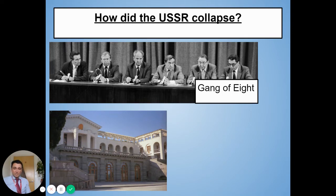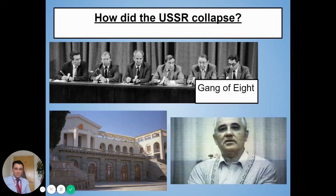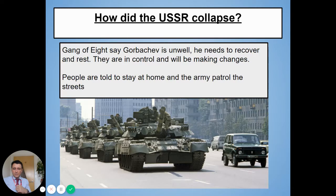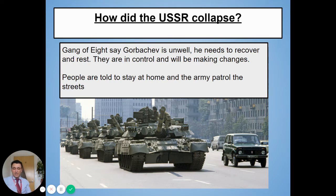They told Gorbachev to sign documents saying he was stepping down, but he refused to sign anything. He made a home video explaining the situation which he tried to smuggle out. The Gang of Eight weren't expecting Gorbachev not to back down, and so they went on national television and said Gorbachev was unwell and needed to rest. They announced that the Gang of Eight were in control and would be making changes. They told the people of Russia to stay at home, and the army would patrol the streets. Their aim was to undo all of Gorbachev's changes.